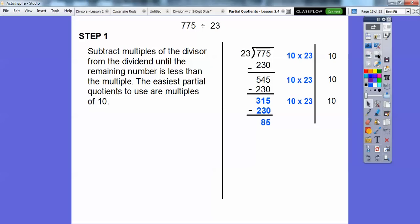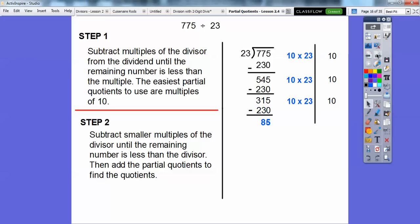Now we can't get another 230 out of 85. So what we have to do is subtract smaller multiples of the divisor until the remaining number is less than the divisor. And then we'll add the partial quotients together. I could have done 1 times 23 and then 1 times 23 again and 1 times 23. I'm just kind of cheating here. 3 times 23 is 69. So I'm going to subtract 69 right here. When we subtract you're going to get to the same 16 right here.